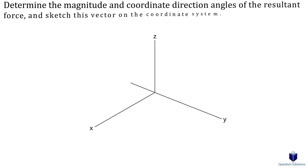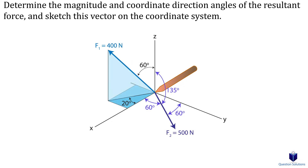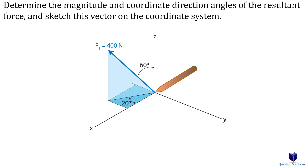Let's look at another problem where we need to find the magnitude and coordinate direction angles of force F. Force F2 is given with coordinate direction angles, but force F1 is not — instead, we're given shaded triangles representing angles called the transverse angle and the azimuth angle. Let's see how we can use those to break force F1 into components.